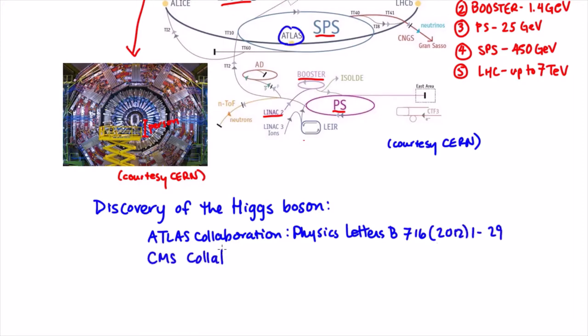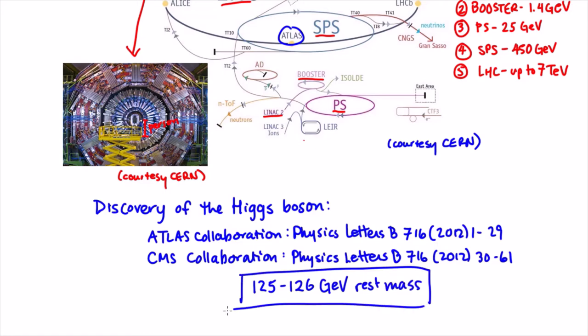In August they made the announcement official by publishing two papers. These papers, the cumulative work of thousands of people in many nations, provided experimental evidence of the discovery of the Higgs boson and made it possible for Higgs and Englert to receive the Nobel Prize in Physics in 2013.